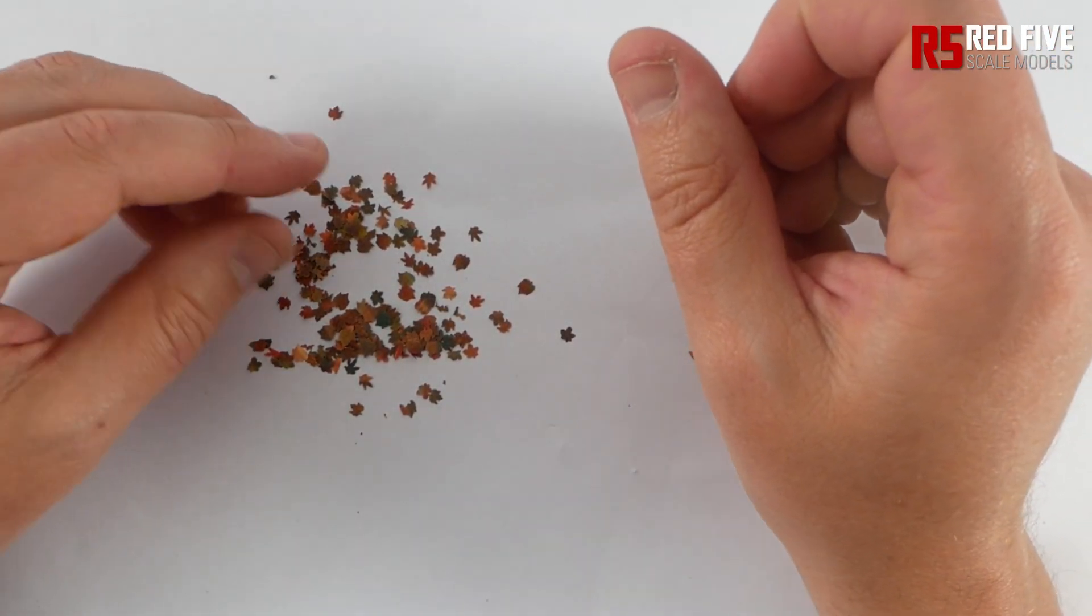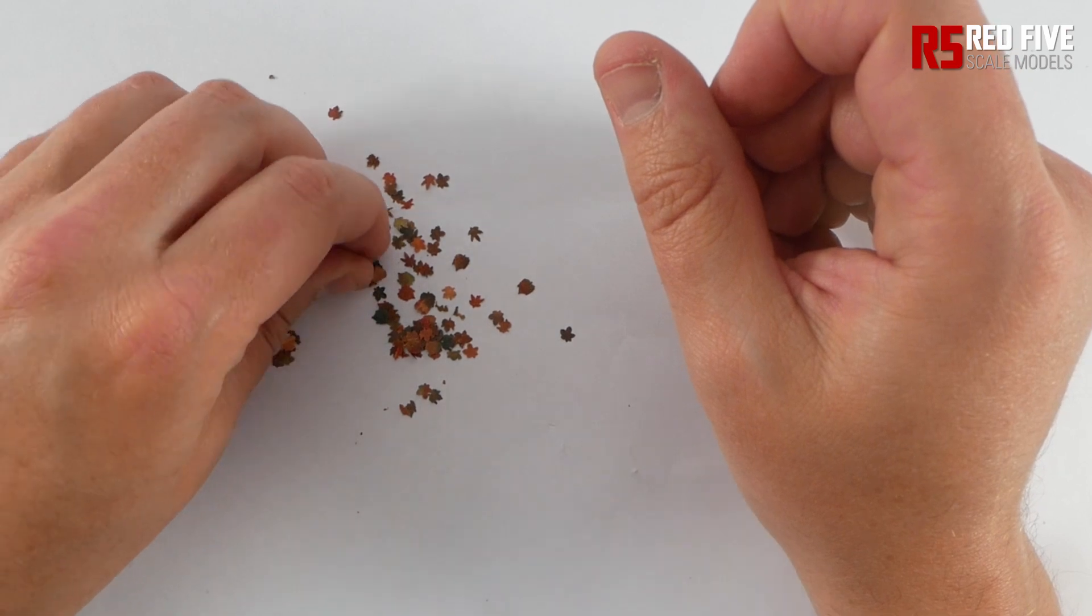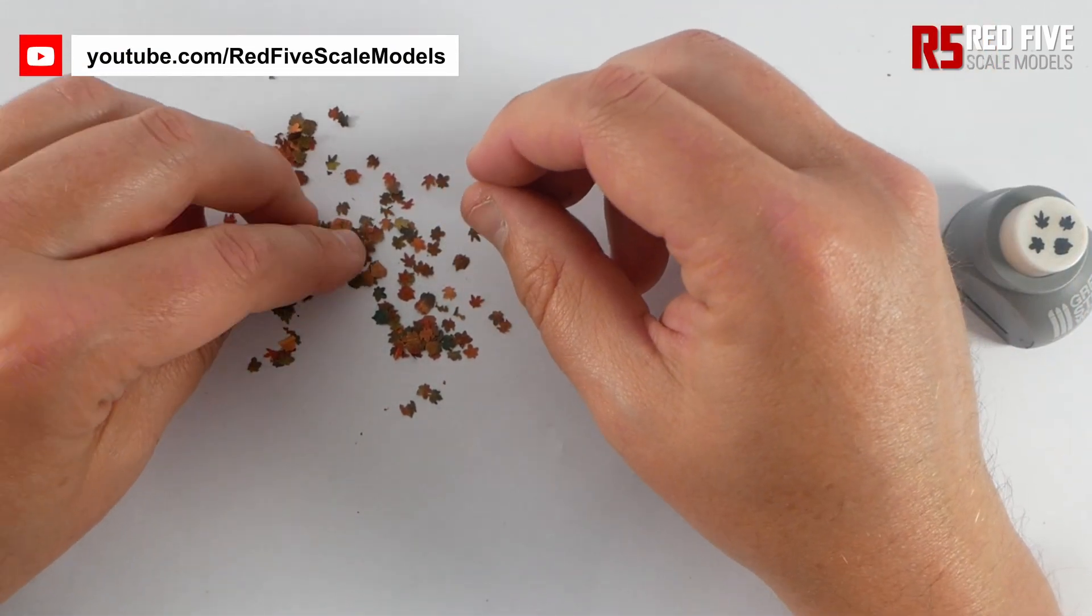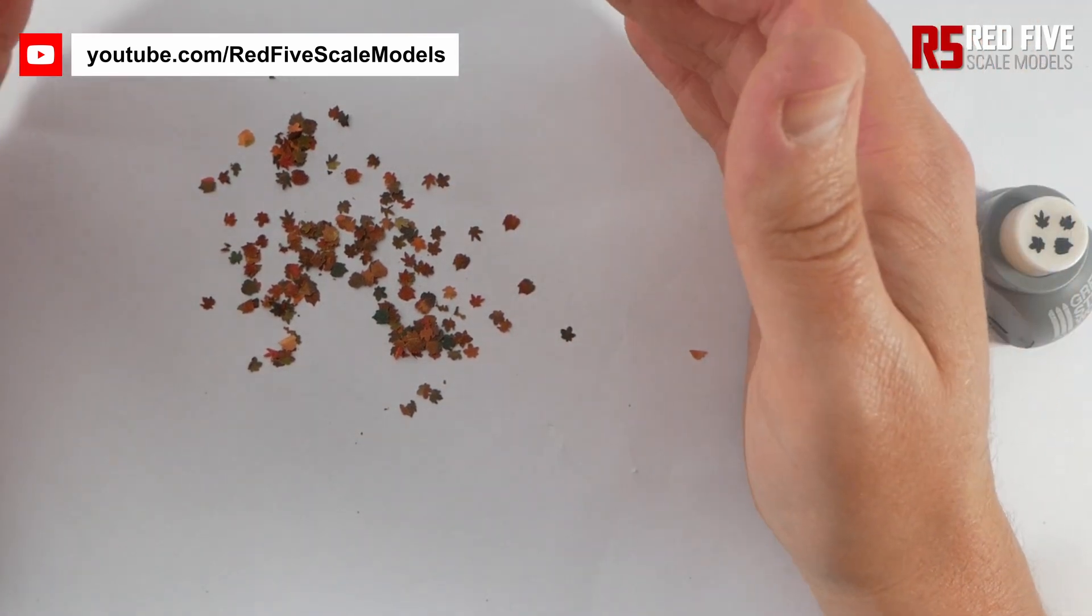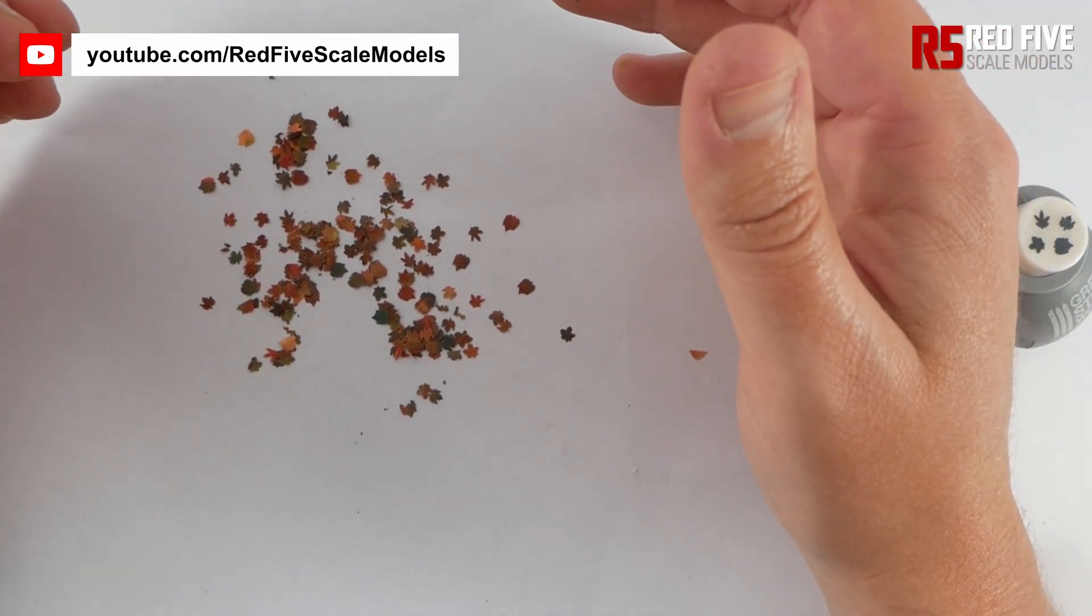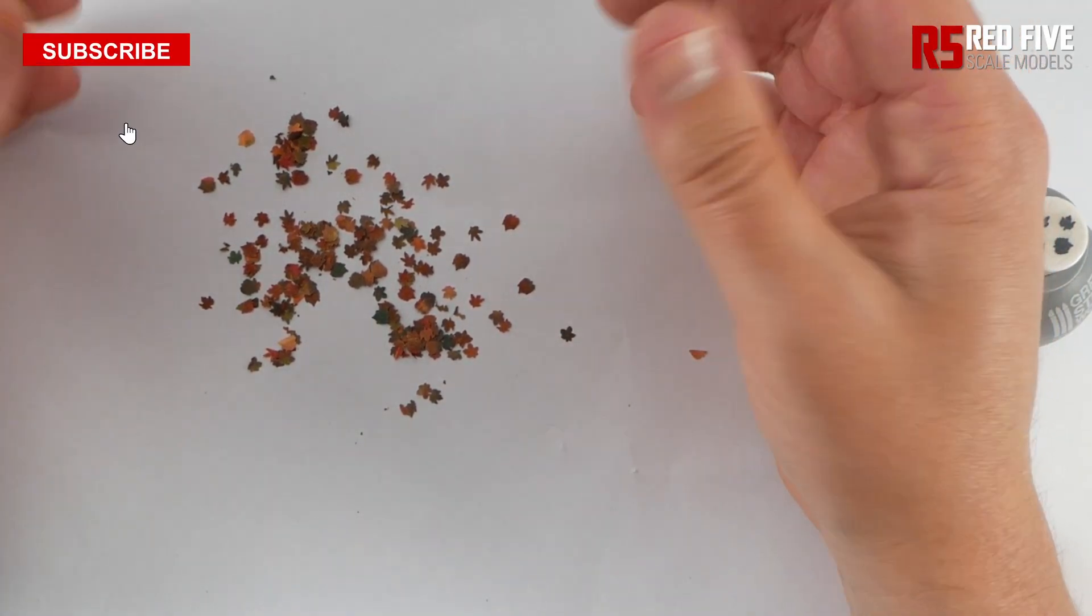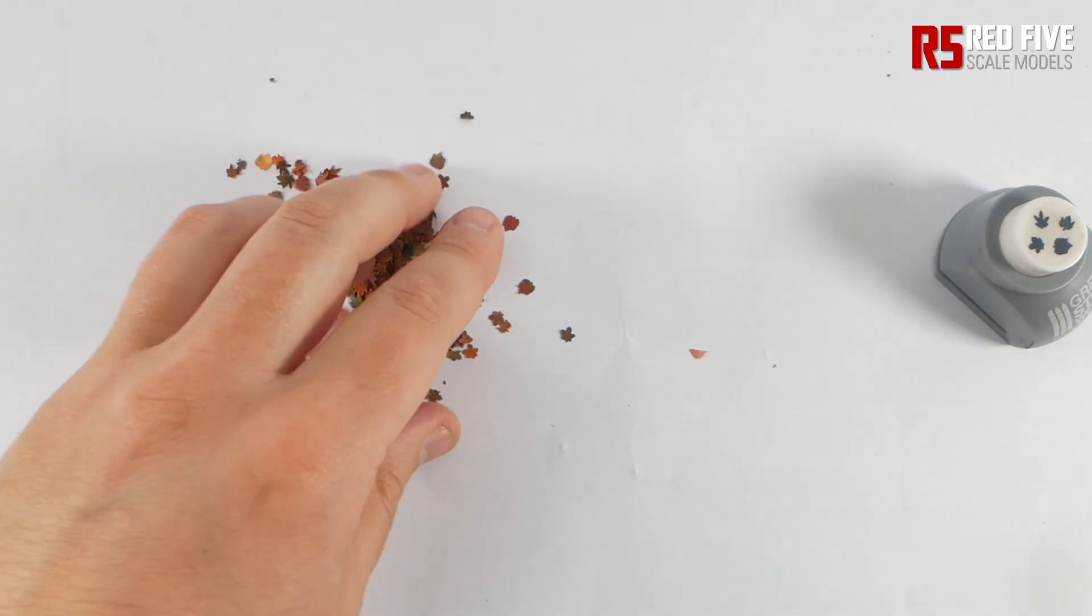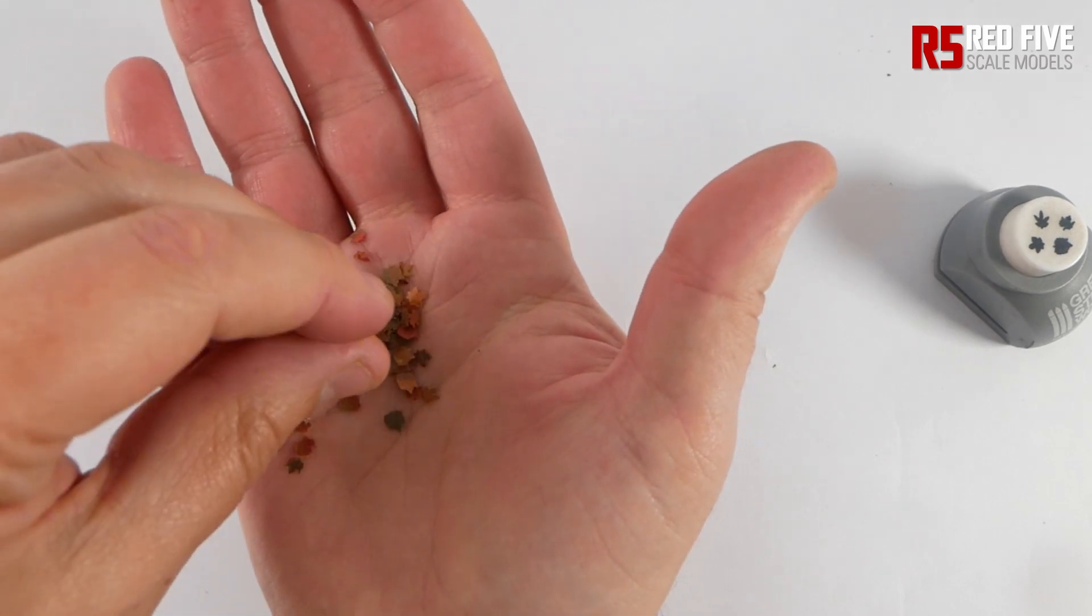You can varnish them, gloss them, stick them down with PVA. I would use a PVA or like a crystal clear or something like that. Mainly because it'll not run. If you use something like white spirit or whatever madcap fixing method you want to use, the inks might run. And if you find it does and it gets on your model, you can quite easily just wipe it off with some isopropyl alcohol. But yeah, that's basically it. There's your leaf.